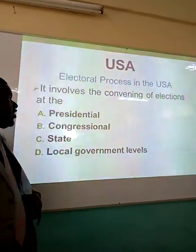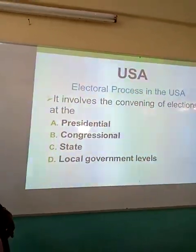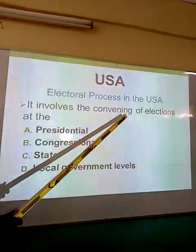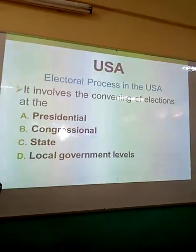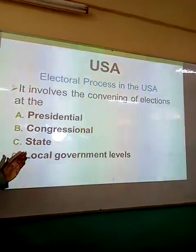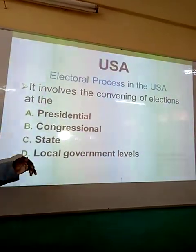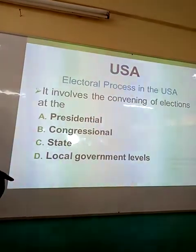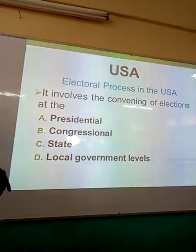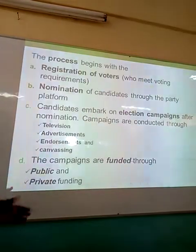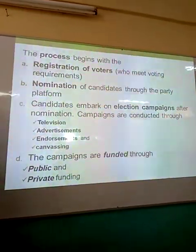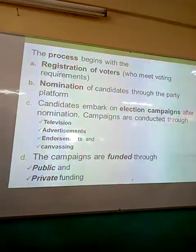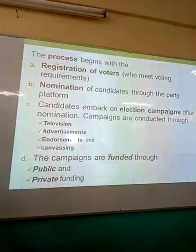The United States of America undergoes an electoral process which involves, number one, convening of elections at the following levels. In the U.S., elections are convened at presidential level, at congressional levels, at state levels and at local government levels. The process begins with registration of voters, and only those who meet voting requirements are registered.